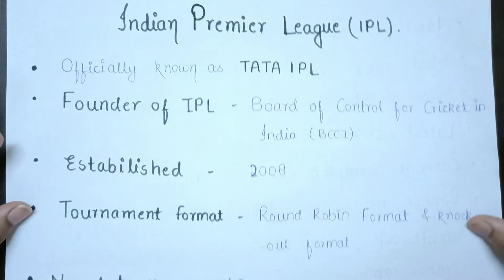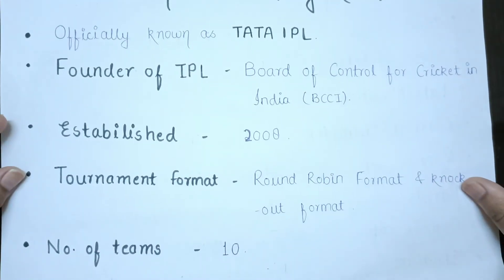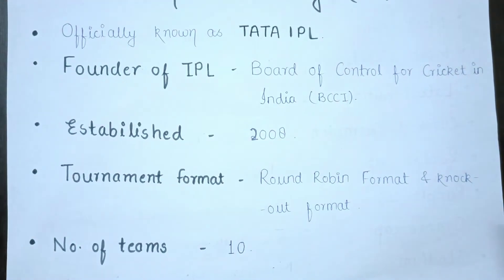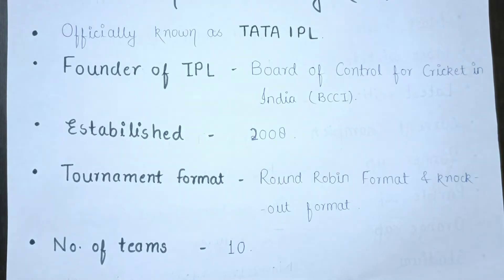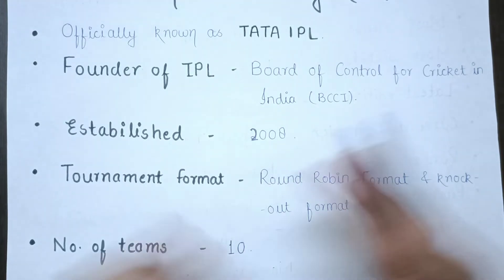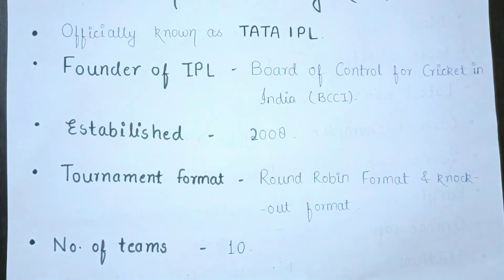How many teams are in this game? There are a total of 10 teams. With 10 teams in a round robin format, you can calculate the total number of matches.